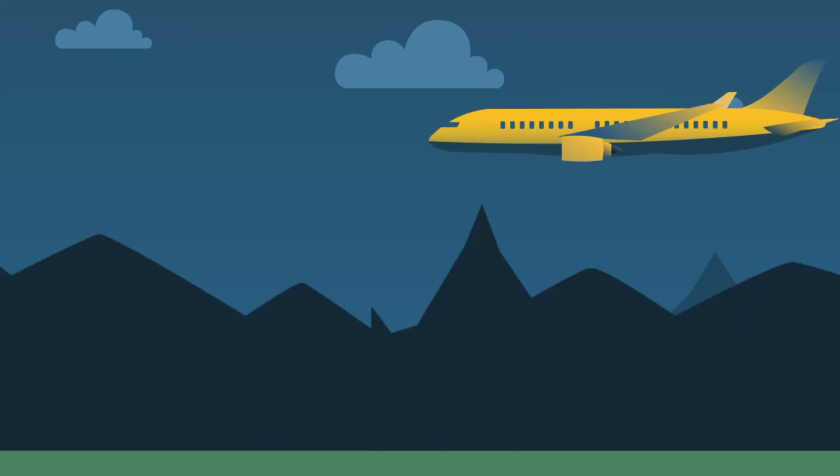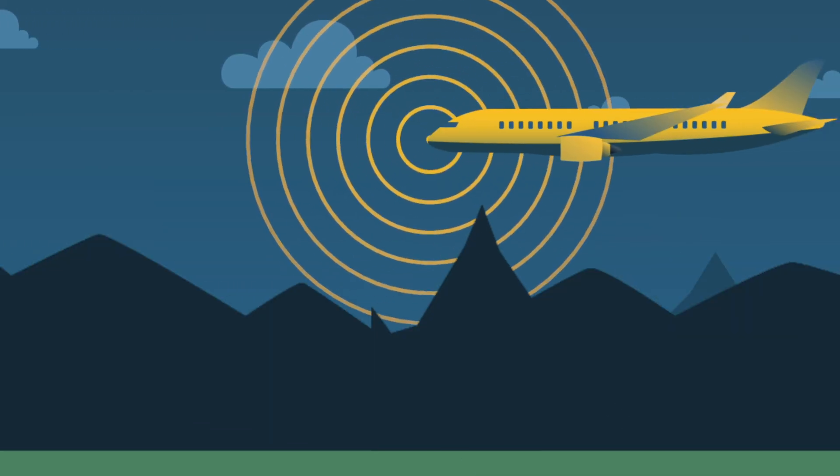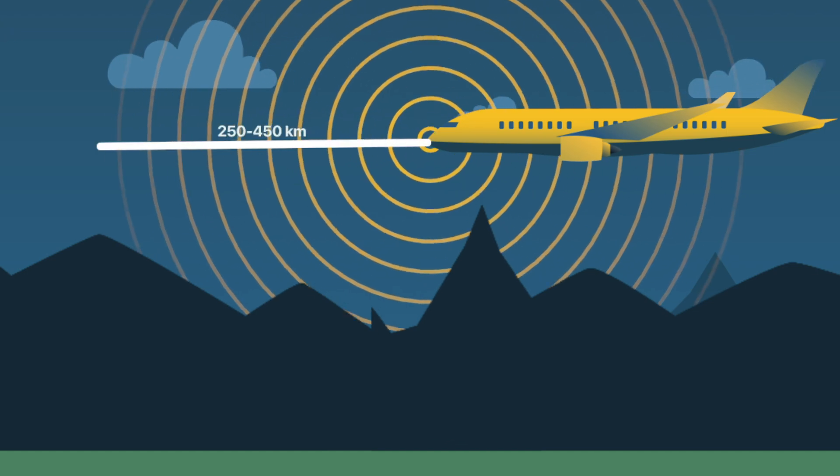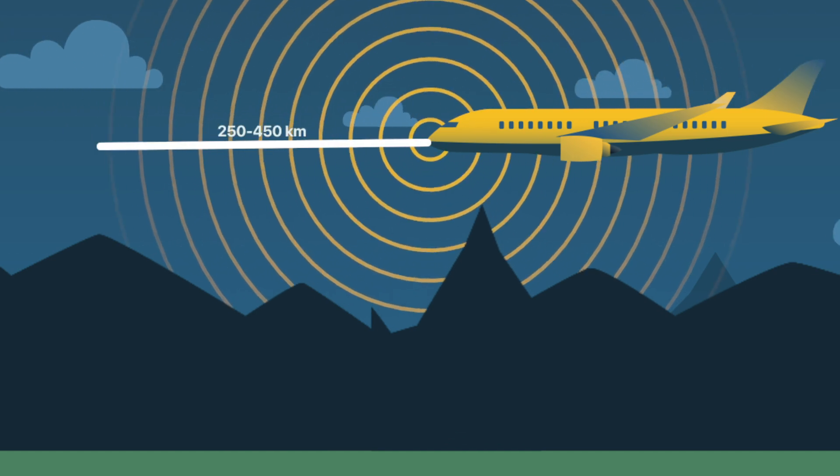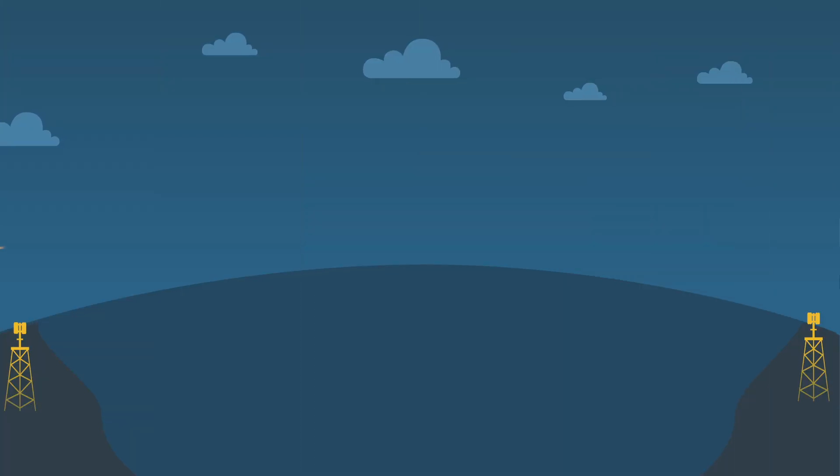Due to the high frequencies that are used, the coverage from each receiver is limited to about 250 to 450 kilometers in all directions. The further away from the receiver an aircraft is flying, the higher it must fly to be covered by the receiver.